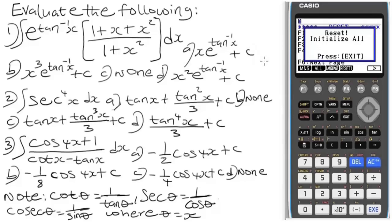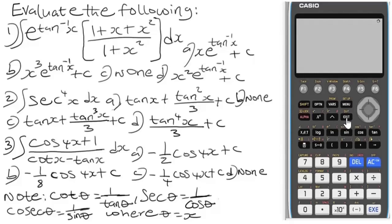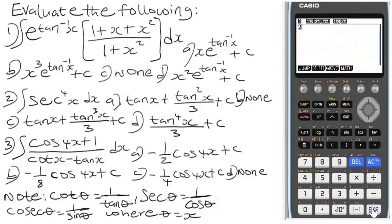Now we are going to integrate these indefinite integrals. The next thing you have to do is store a number — I recommend x = 2, as I have practiced with two for a very long time and have not found any error. To store on this calculator, go to Matrix, press the number 2, press the arrow button, then press Alpha, store it as X using the plus button. This confirms two is stored on the calculator.